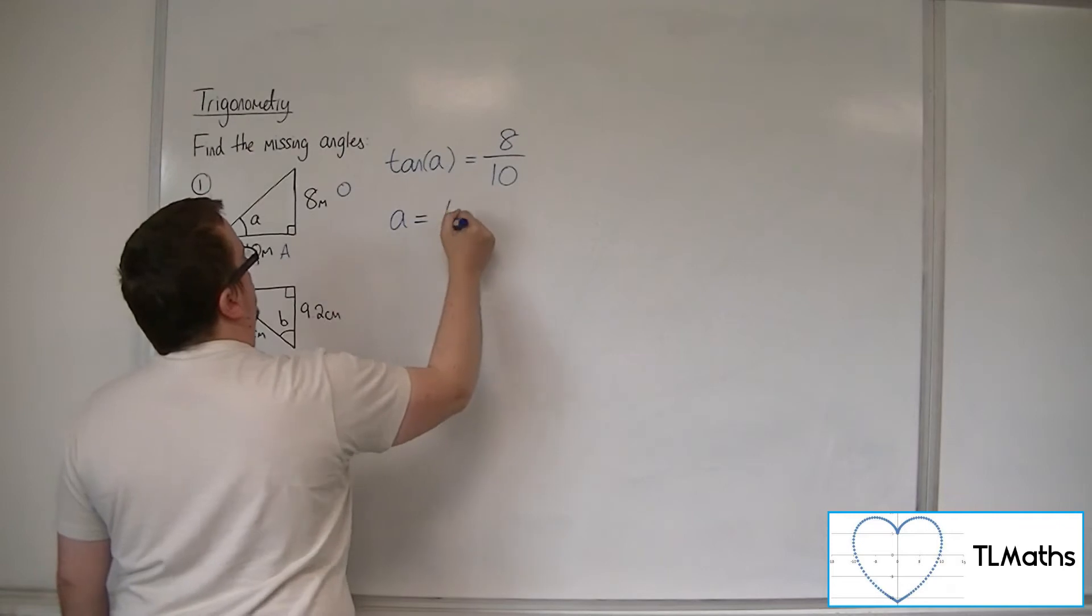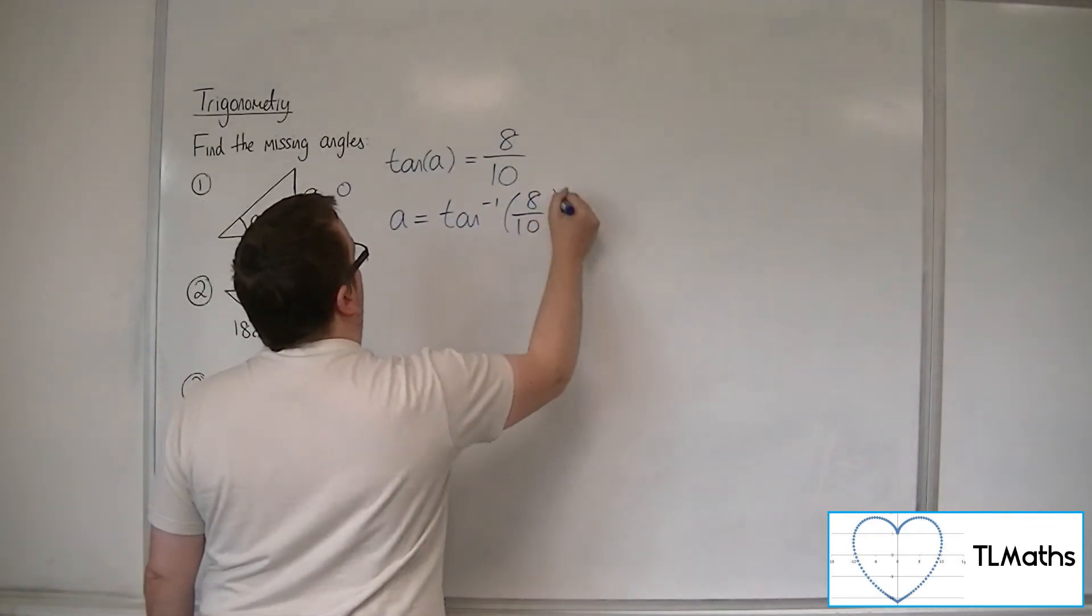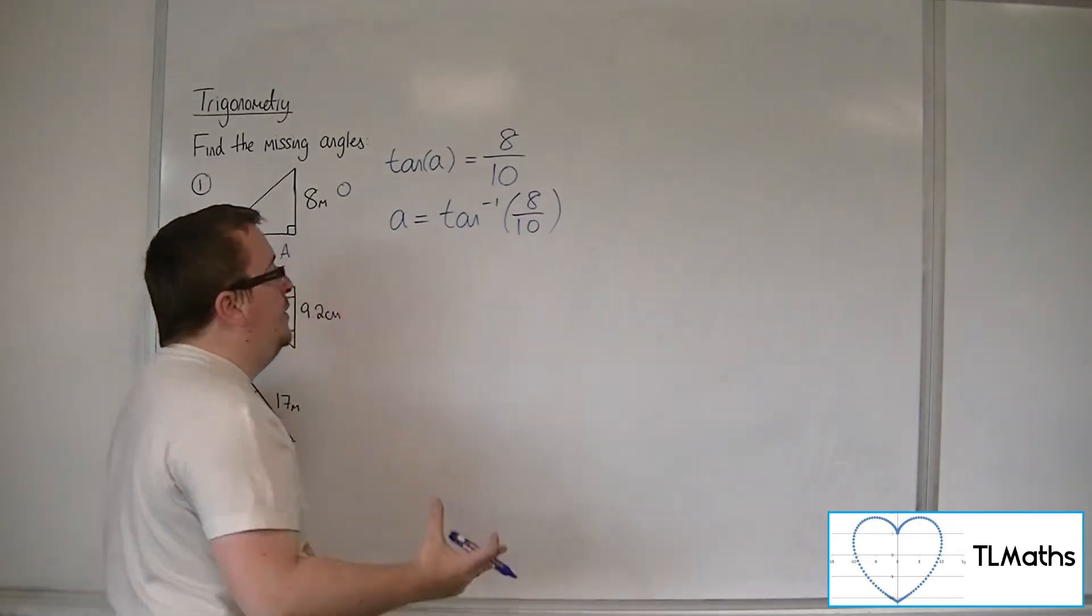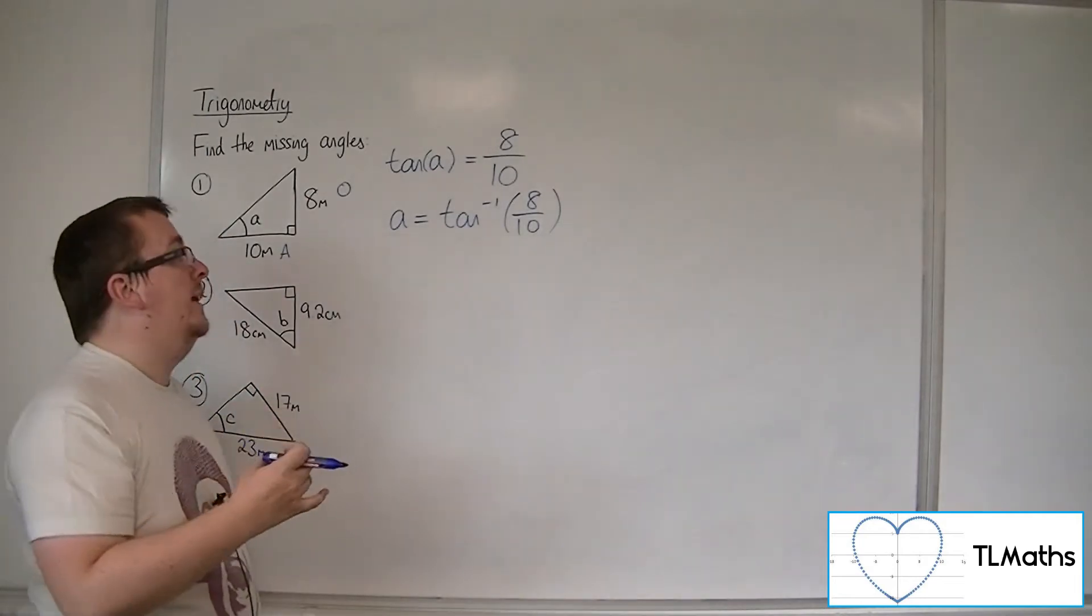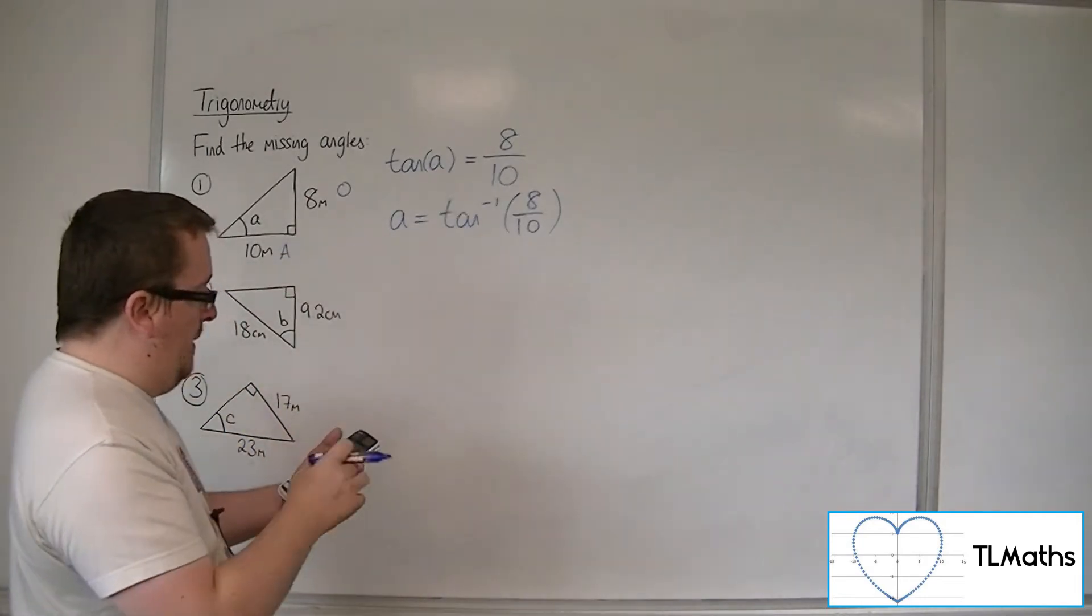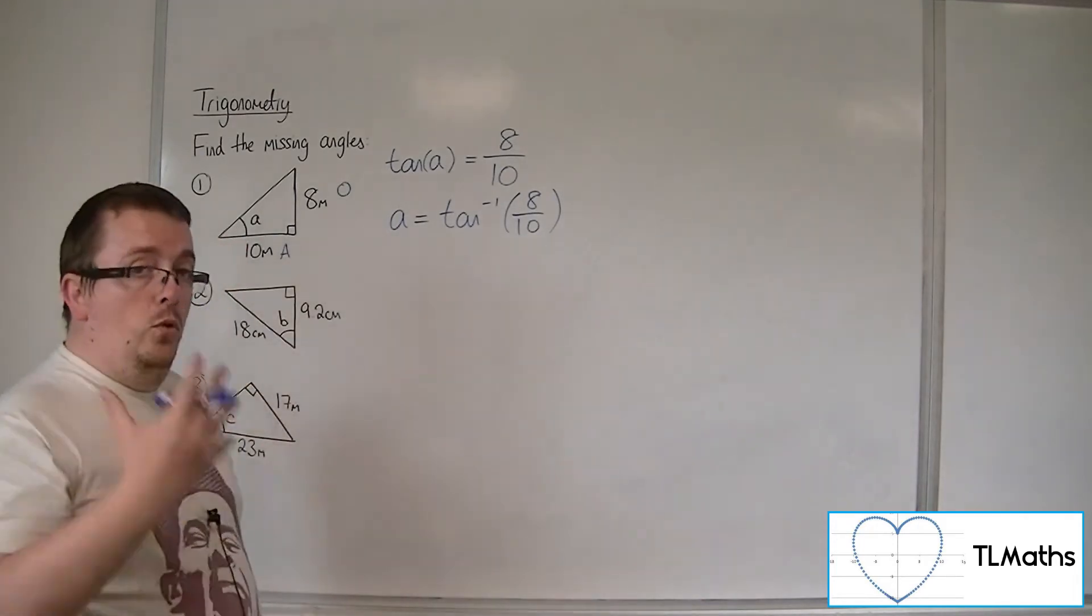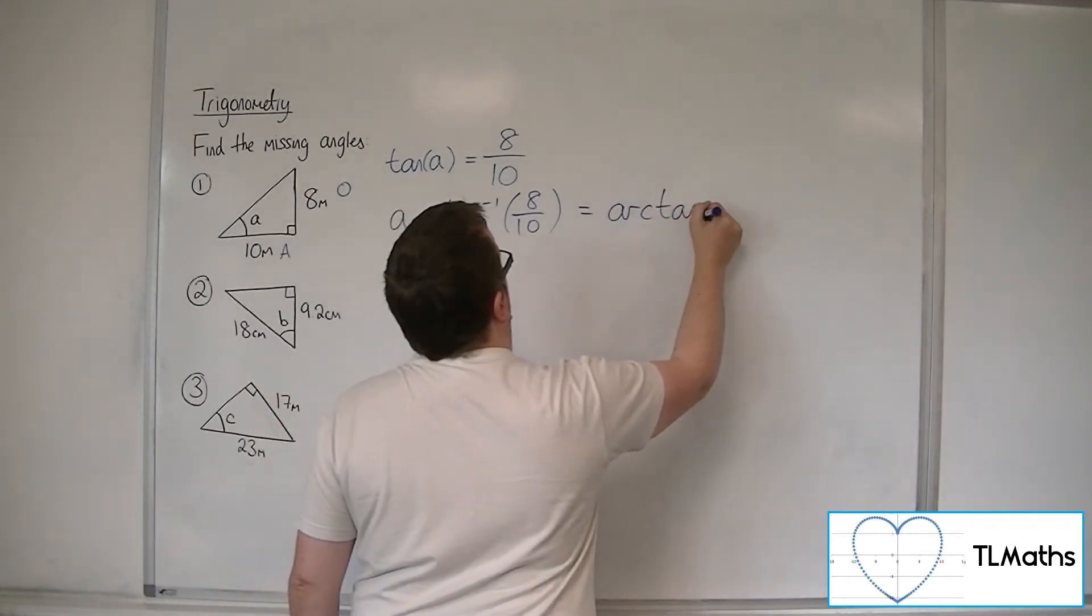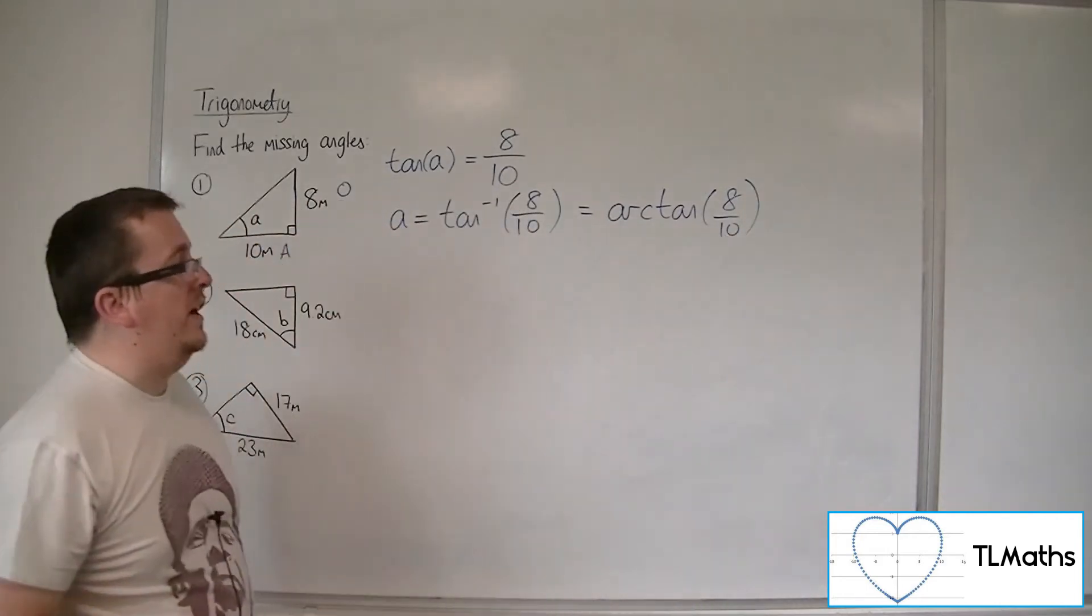So A is equal to the inverse tan of 8 over 10, the inverse function. Now, you can write the inverse of tan like this, tan minus 1, which makes sense given that that's on your calculator, or we can write that as arc tan of 8 over 10. Both of these mean precisely the same thing. This one you're less likely to have seen at this point, but you need to know both.